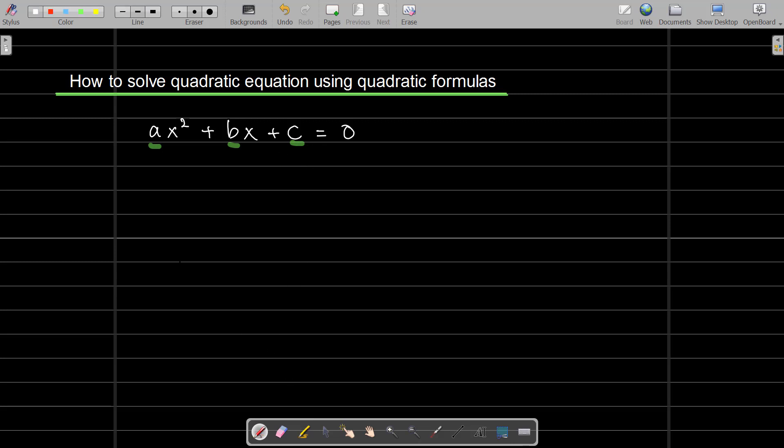And here is the quadratic formula: x = (-b ± √(b² - 4ac)) / 2a. Let's use this formula to solve the quadratic equation.